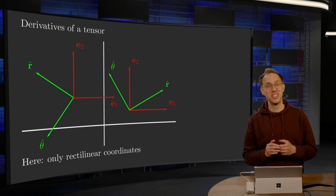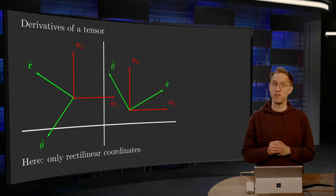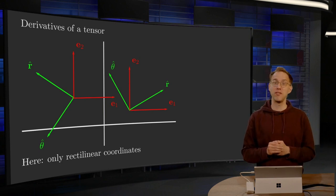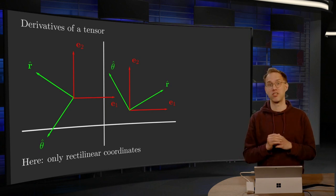Well, for the applications I have in mind for now, rectilinear coordinate systems are sufficient. And if you have rectilinear coordinates, differentiation of tensors becomes much easier because the basis vectors are constant.